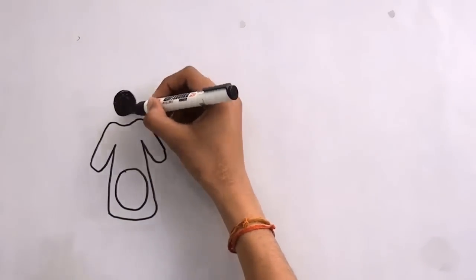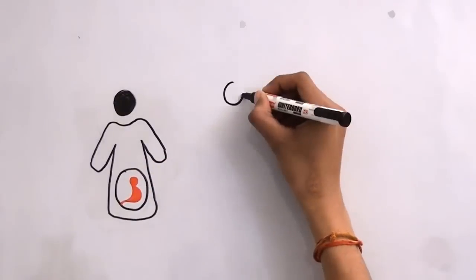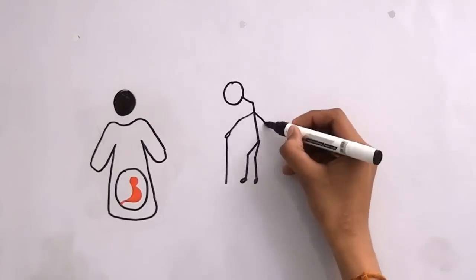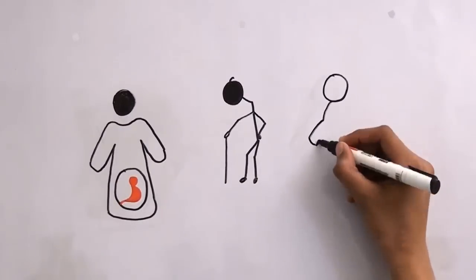Blood is needed everywhere: accidents, transfusions, haemophilia, chemotherapy, premature birth, surgeries, anemia, and the list just goes on.